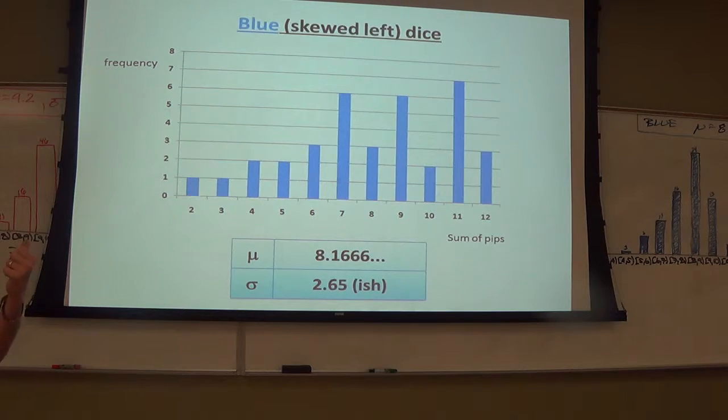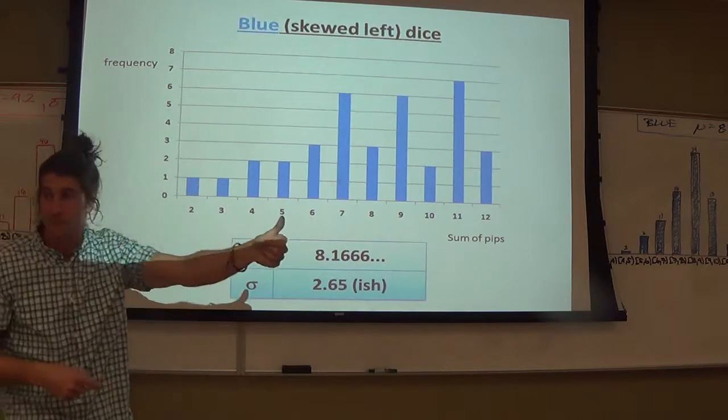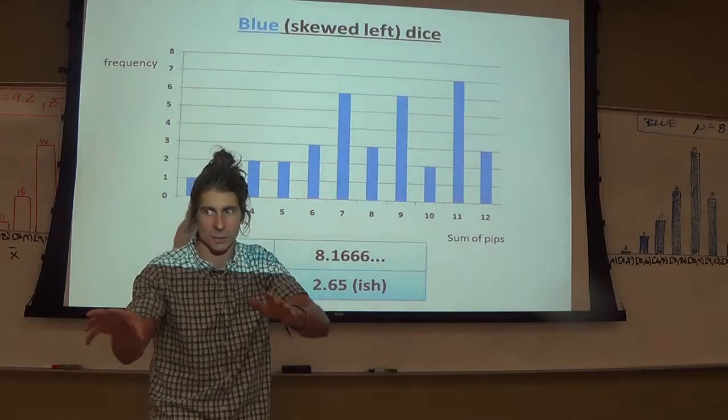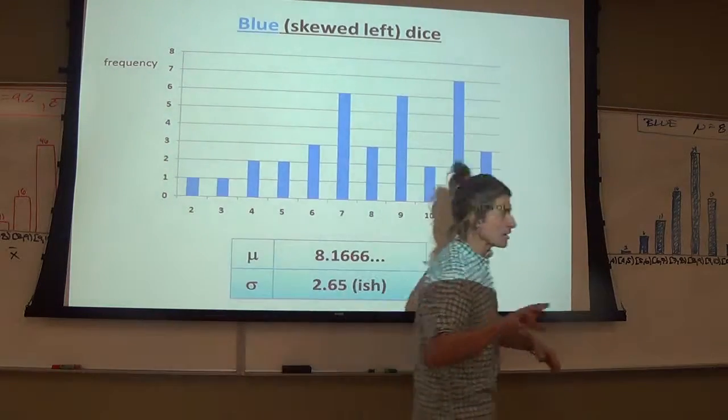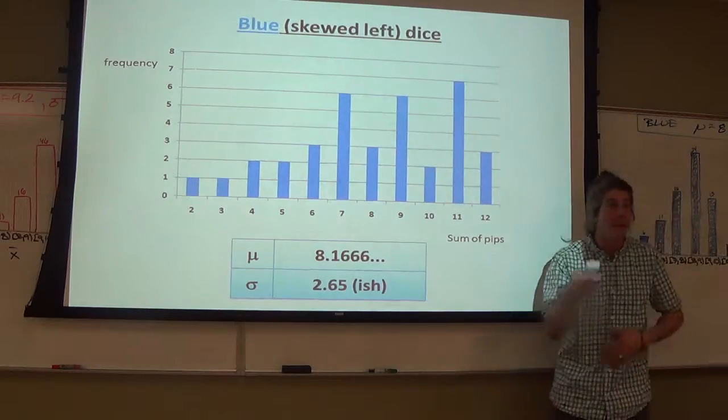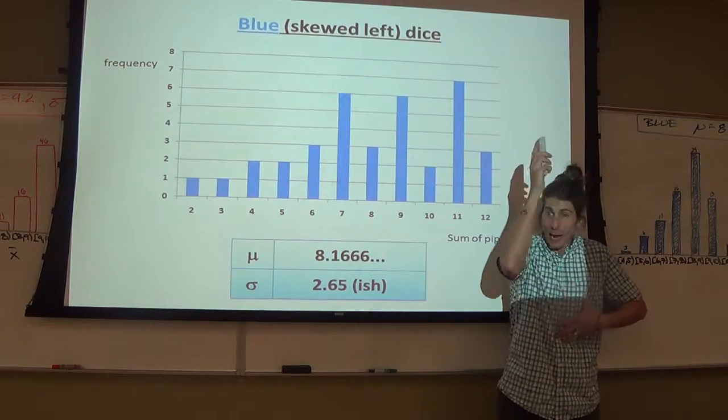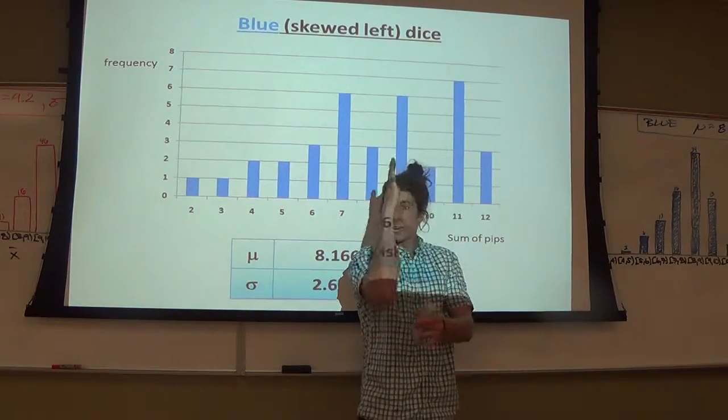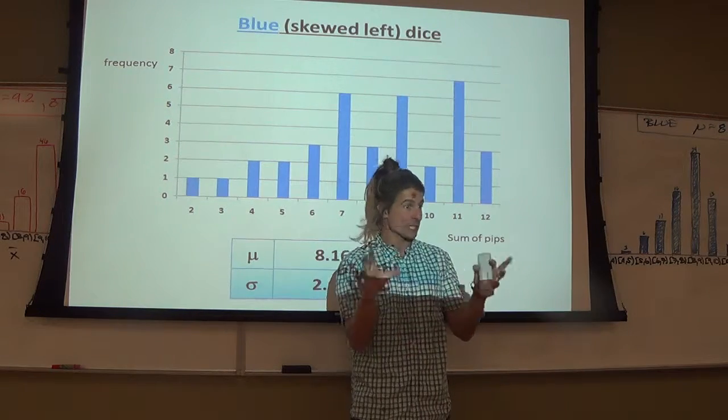So what you do is you draw a sample and you hope if your sample is done well enough, you'll get an idea of what mu is. Is that what happened here? Yes, on average, we got a good idea of what, even though we didn't know what mu was, the highest bar on the curve shows us where mu is. That makes me happy.